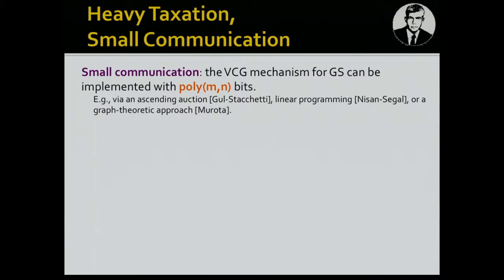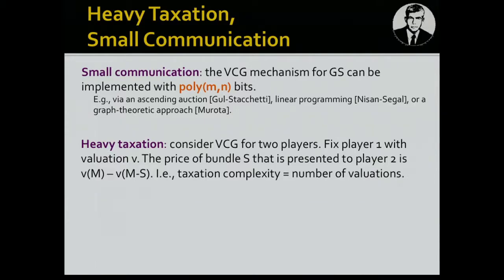To compute the VCG mechanism we need to find the welfare-maximizing allocation. If we can do that we can compute prices. There are a number of ways to do that with small communication: one is via an ascending auction, there's a certain linear program one can solve efficiently, and if you want strongly polynomial algorithms there are ways to do that too. Now let's see why the taxation complexity of the VCG mechanism is huge. Consider VCG for only two players: fix player one with valuation v.